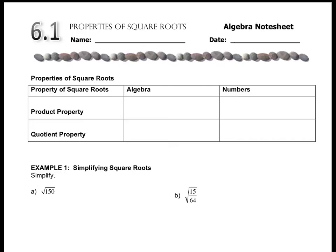In chapter 6, we talk about exponents and we graph exponential equations or functions. The first type of exponent we're going to talk about is squaring, because that's one you're very used to. The inverse of squaring is square rooting, which is the property we're going to be looking at today.